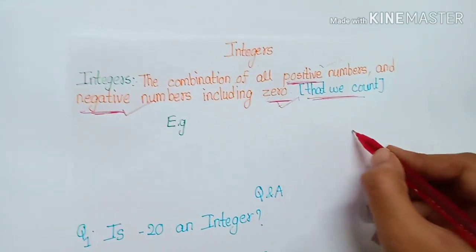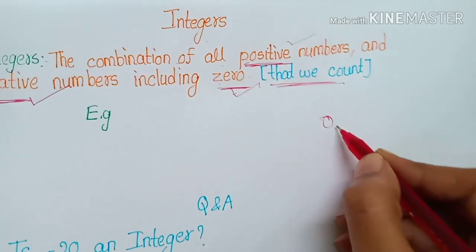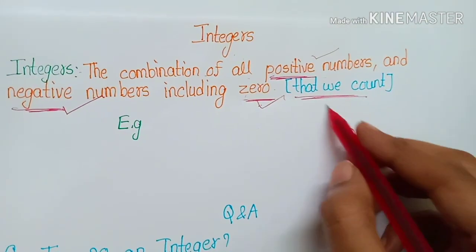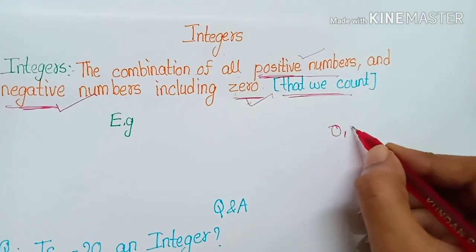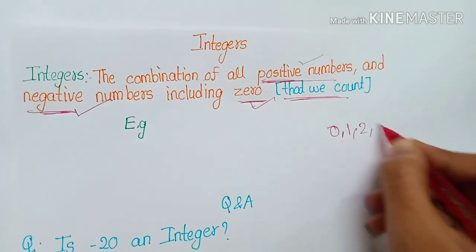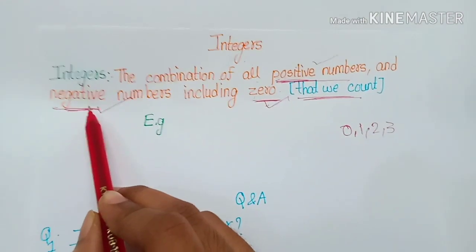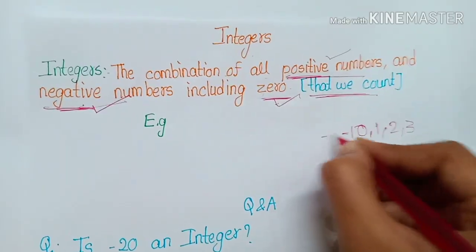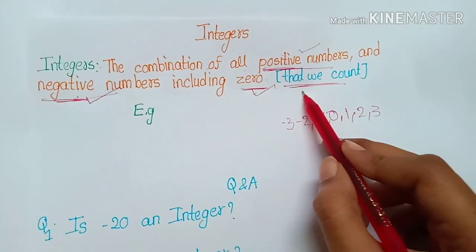First we write zero. Integers include positive numbers — when we start counting anything we start from one, so one, two, three, and we go on. They also include negative numbers: minus one, minus two, minus three, and so on.